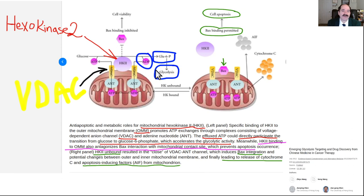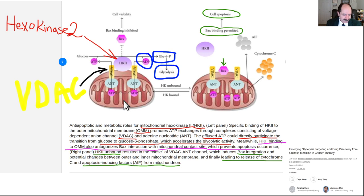HK2 gets upregulated — tons more of it is made than under normal circumstances — so the cancer cell can suck in tons of glucose. It's also sucking in glutamine, which is another reason to keep protein a little on the low side. Even though animal protein is much worse, keeping protein moderate is relevant — that's a topic for another lecture.